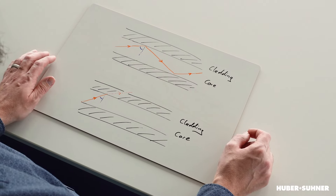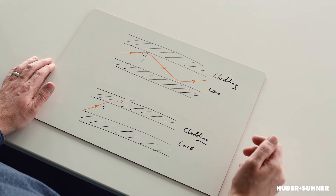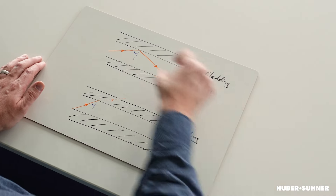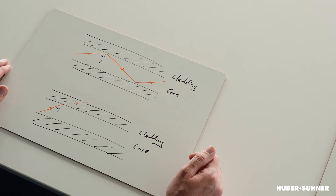To understand where this other negative effect comes from when over-bending a fiber cable, let's first have a look at the theory on how a light signal actually propagates through a fiber cable. Here in this drawing, on the outside we've got the cladding, and on the inside we've got the fiber core with a higher refractive index.